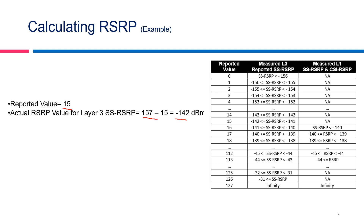This can be verified from the reported mapping table. As discussed, this table represents the reported value and the corresponding measured value. Looking up reported value 15, it shows that RSRP is less than or equal to minus 142 dBm or greater than minus 141 dBm. Our result of minus 142 dBm is confirmed.